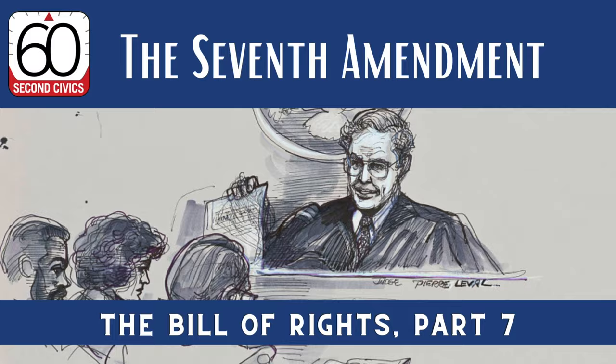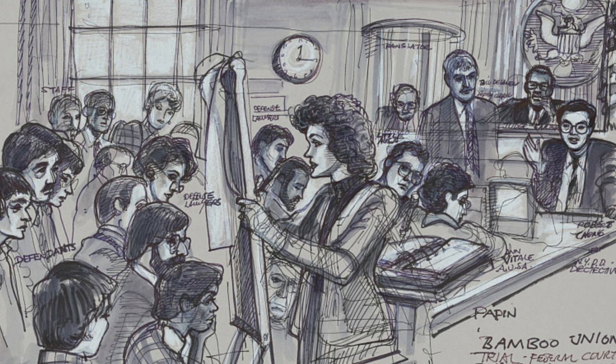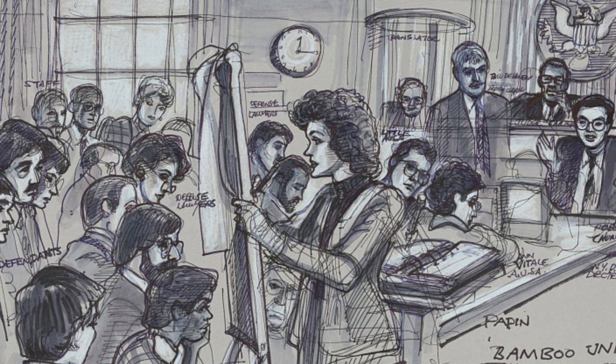The Seventh Amendment to the Constitution addresses jury trials in most civil cases. A civil case is normally a dispute between people or organizations. An example is a case in which a landlord sues a tenant in order to collect unpaid rent.